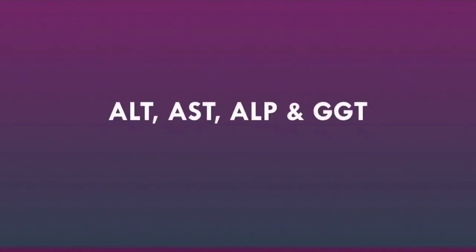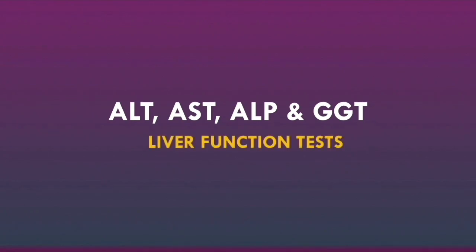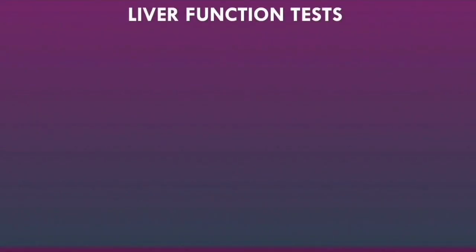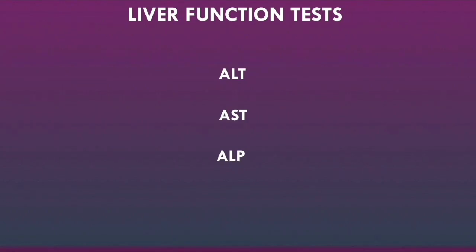Let's go over the basics of how to interpret the ALT, AST, ALP, and GGT levels. One of the enzymes measured in the liver function test is ALT. Another is AST. Another is ALP, which stands for alkaline phosphatase. And finally, GGT, which stands for gamma glutamyl transferase, is also a key enzyme measured in a liver function test.